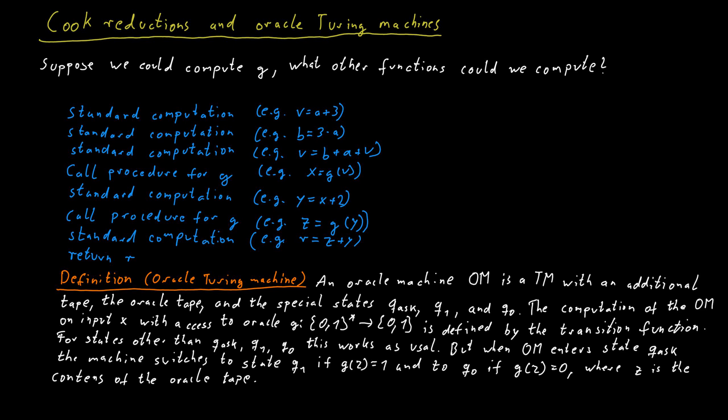If we have some Oracle machine OM and we execute it on input X and the machine uses an Oracle for function G, then we write the result of this computation as OMG of X.